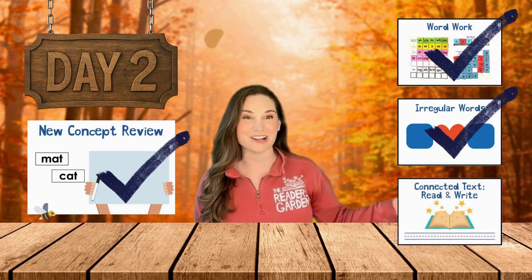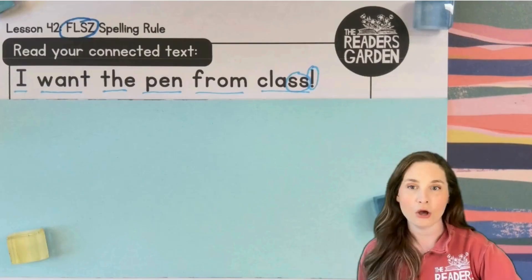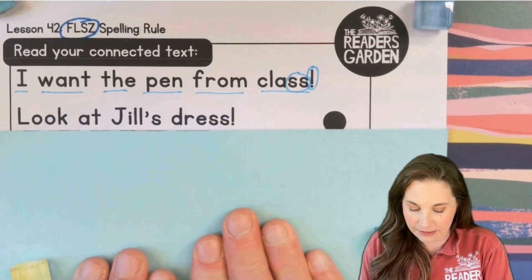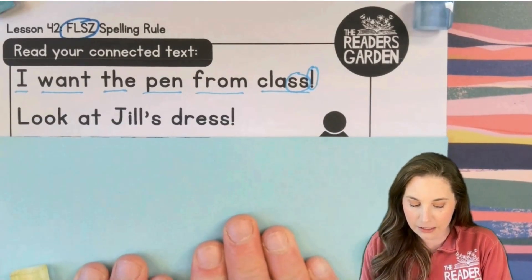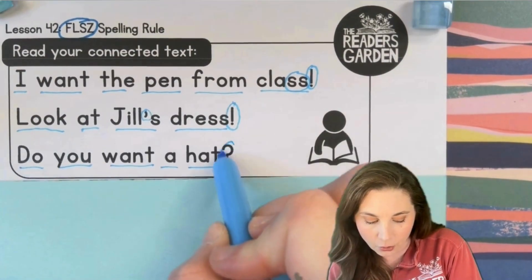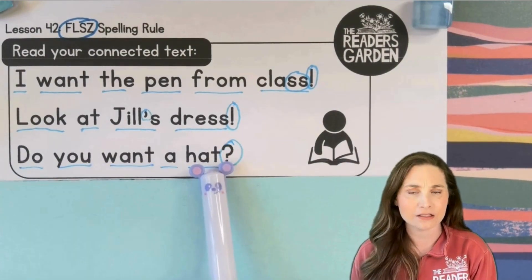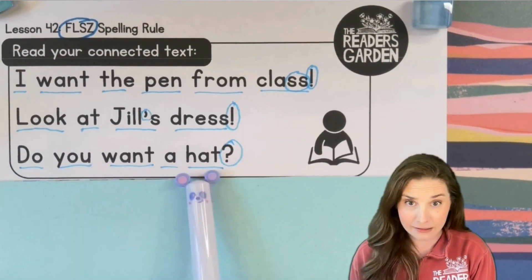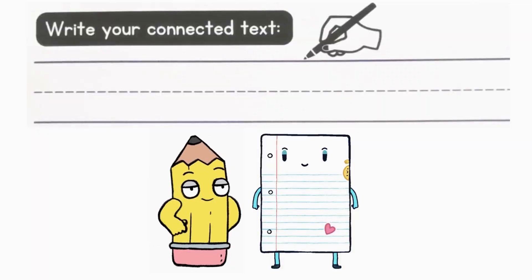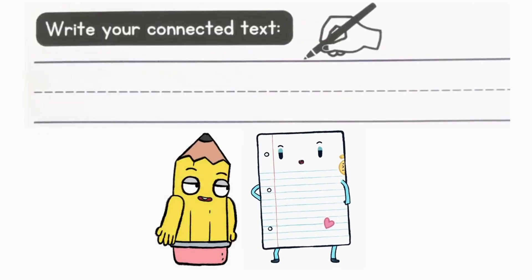Our last stop for today is our connected text reading and writing practice. The next sentence — here we go: one, two, three, four, five words and a question mark. 'Do you want a hat?' Please make sure you have something to write with like a pencil and something to write on like a piece of paper.